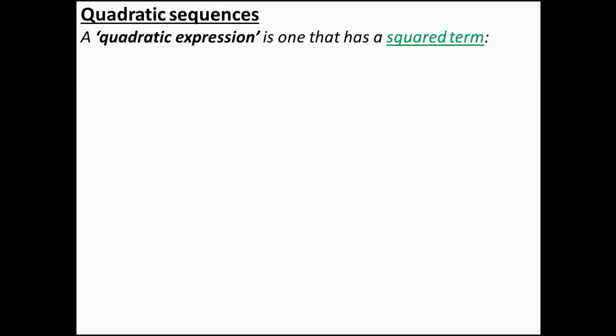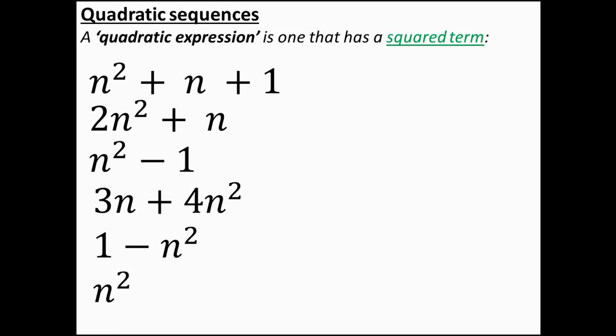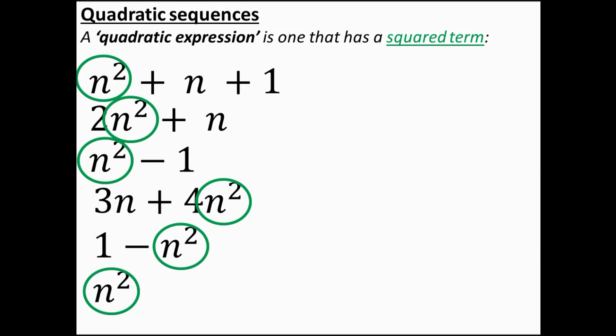Before we start looking at quadratic sequences I want to make sure you're clear about what the word 'quadratic' means. Any quadratic expression has a squared term in it. All of these are quadratic expressions because they all have an n squared term, where n is the variable. If I had an expression with an n cubed term it would not be quadratic — it would be a cubic expression. If n squared is the highest power, then it's a quadratic expression.